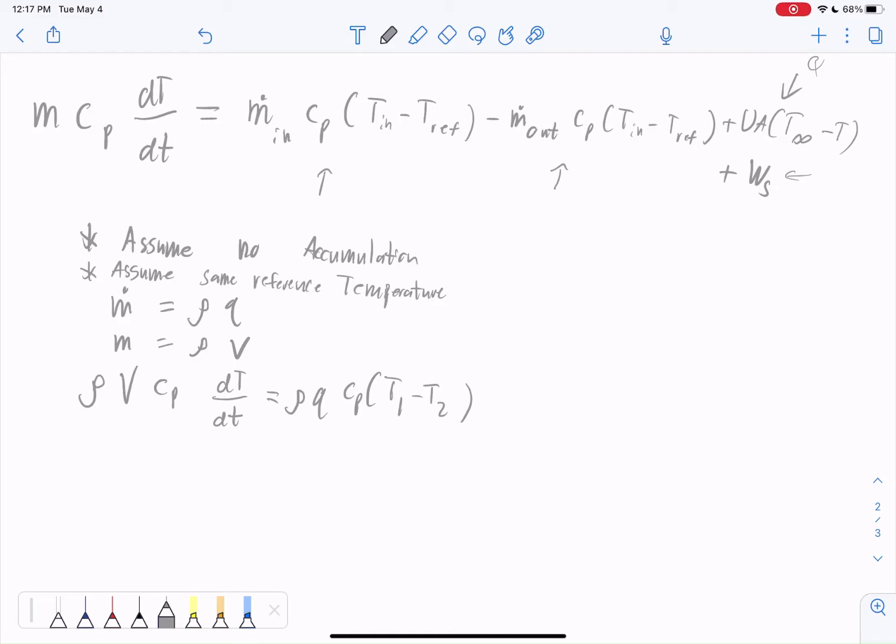We'll assume we have the same reference temperature so that we're able to do so. And also, I notice right here, this should actually be, let me just erase that. That should be T out minus T ref. That should be consistent with what's right here. And that looks really bad, so I'm going to go ahead and erase it. Plus U A, temperature of the cooling jacket, minus T2, plus U A, T A minus T2, plus work shaft.